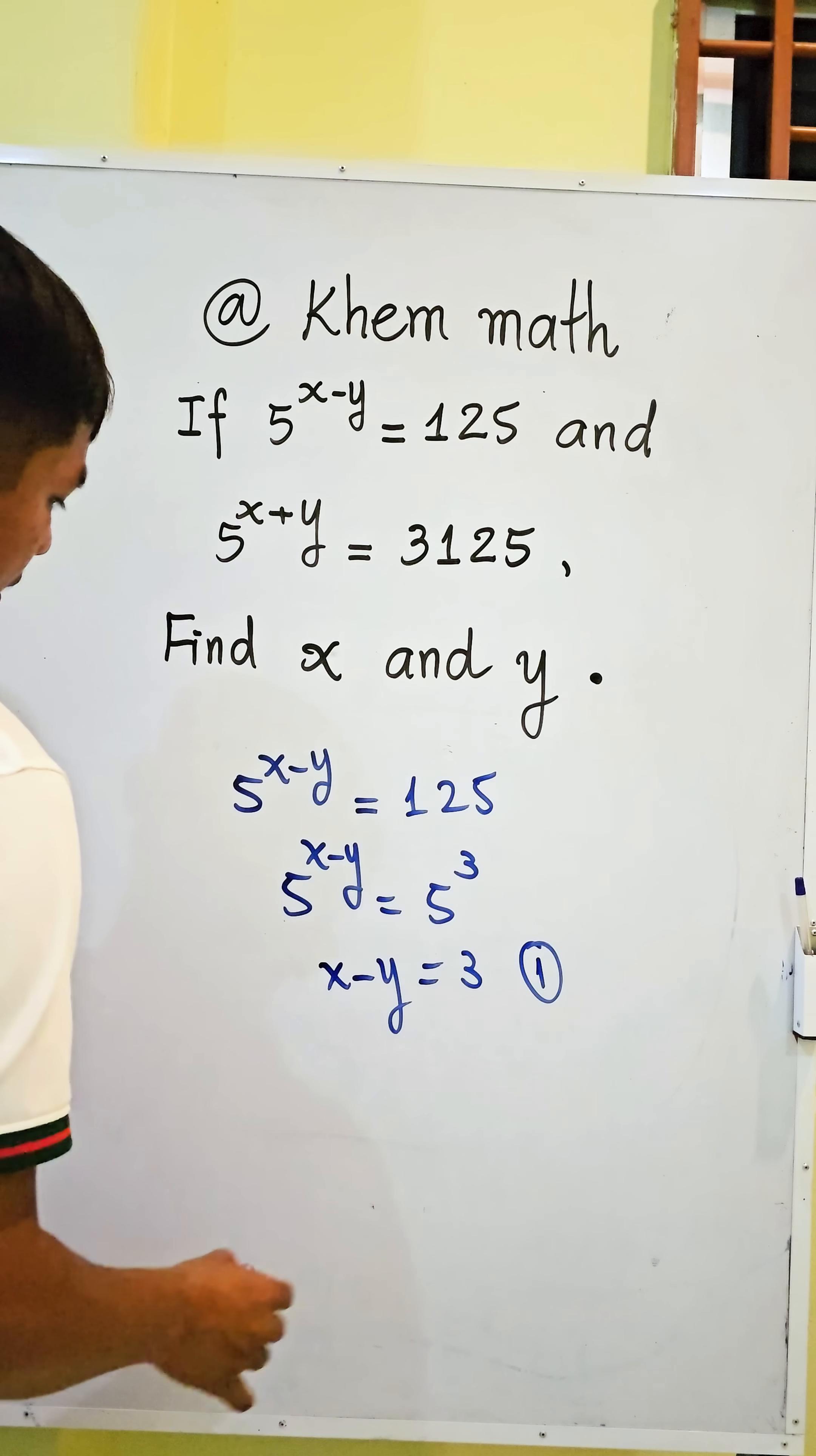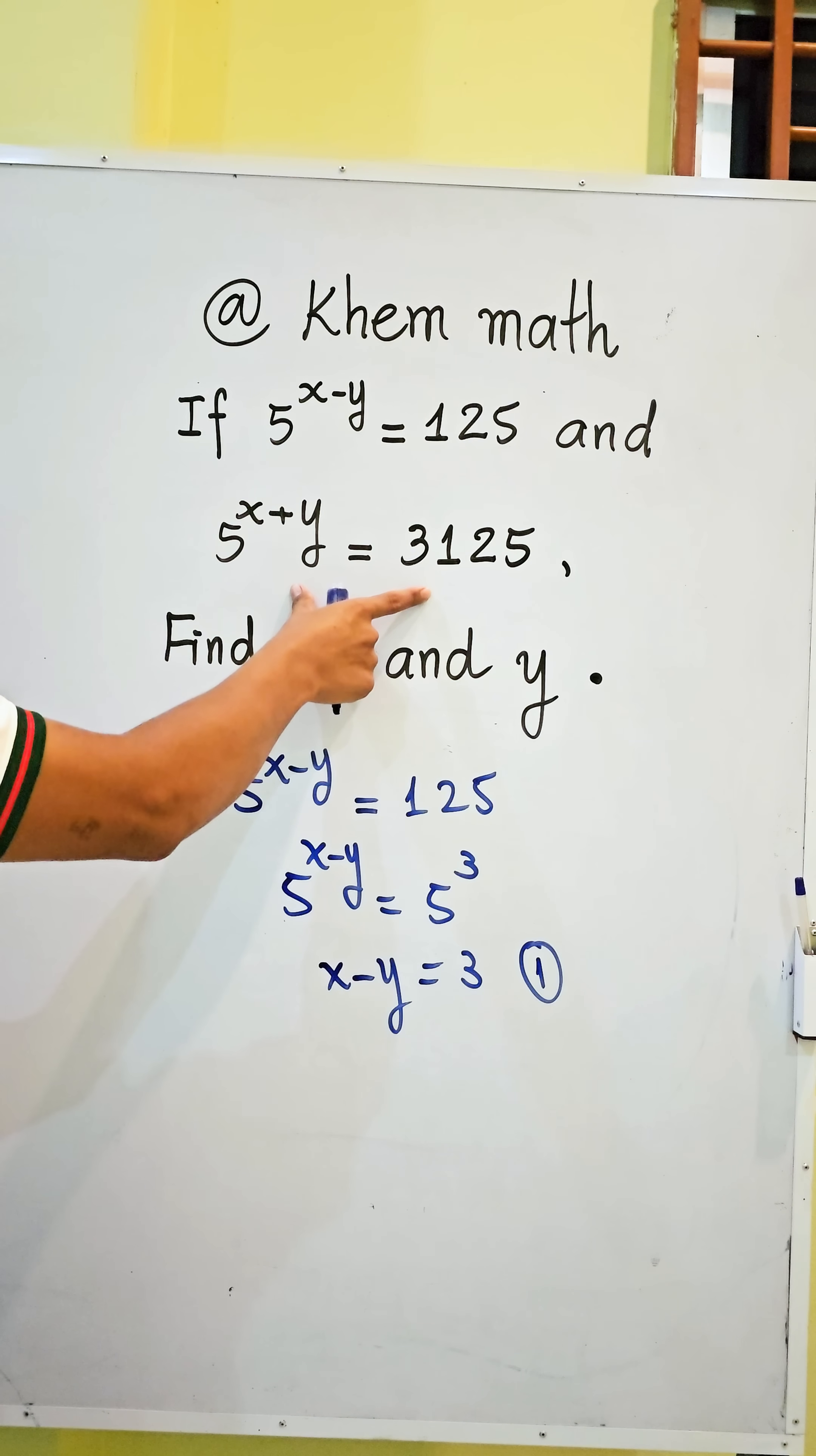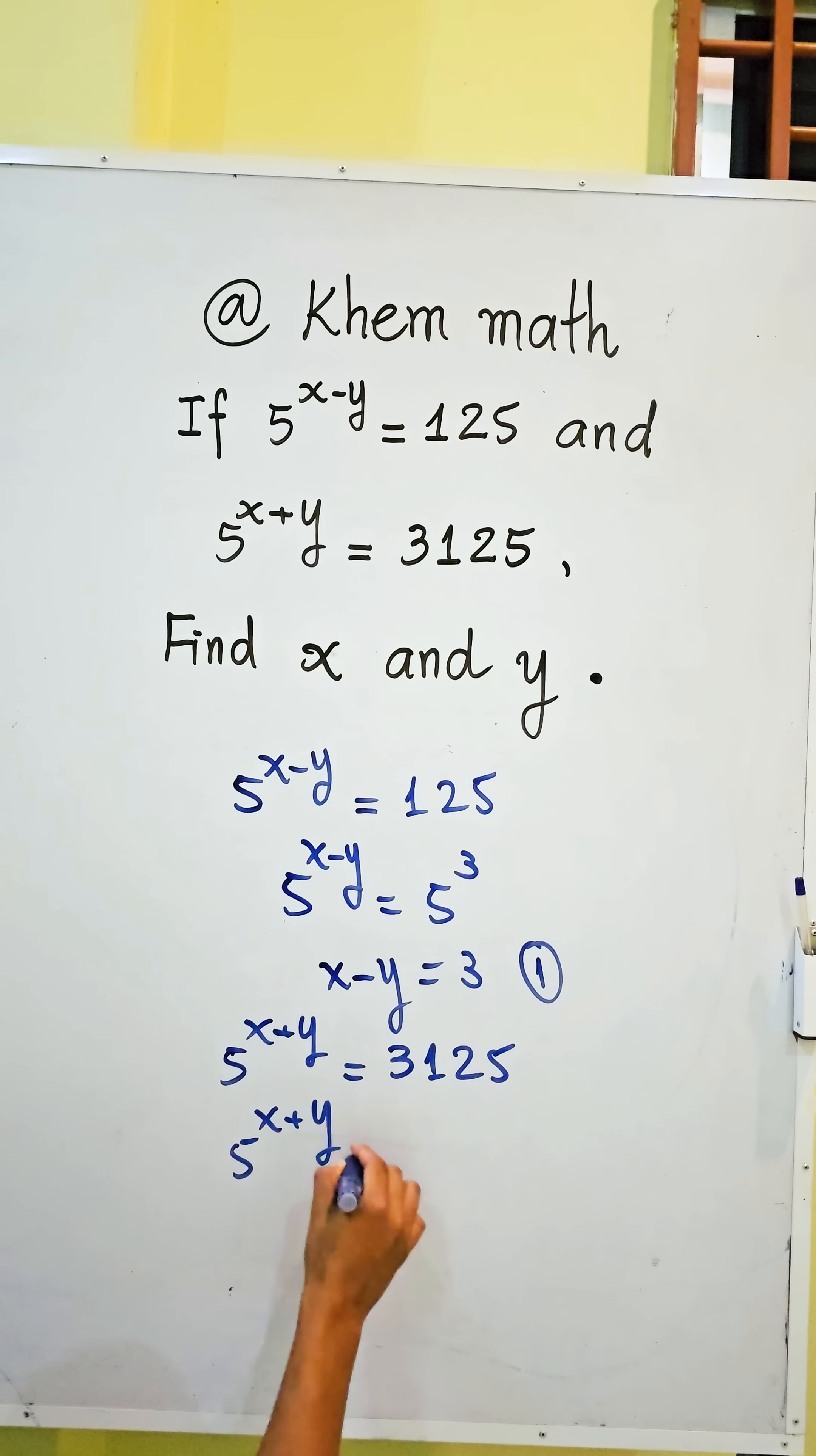And let's call this the first equation. And then for this equation, we get 5 power x plus y equals 3125. And 5 power x plus y equals 3125 equals 5 power 5. So here we get exponent equals exponent.